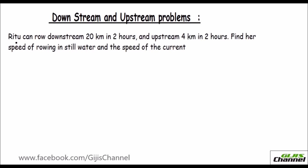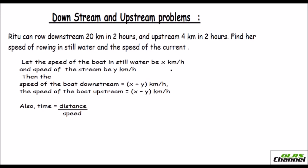In the first problem, Ritu can row downstream 20 kilometers in two hours and upstream 4 kilometers in two hours. The distance and time taken are given. We need to find her speed of rowing in still water and the speed of the current. Let the speed of the boat in still water be x kilometers per hour.